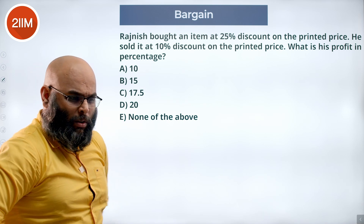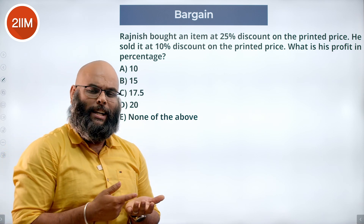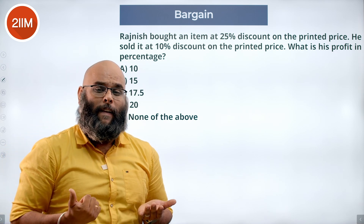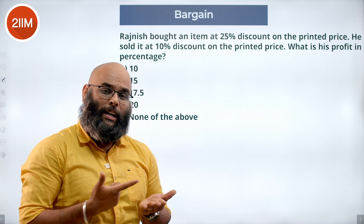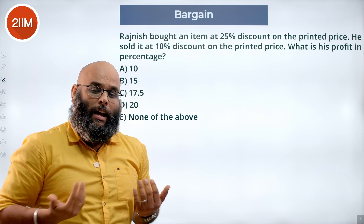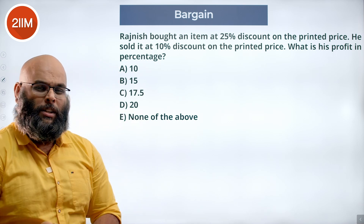Rajneesh buys a product at its printed price. He gets it at a 25% discount on this price. He sells it at a 10% discount on the same price, and we are asked to find his profit percentage.